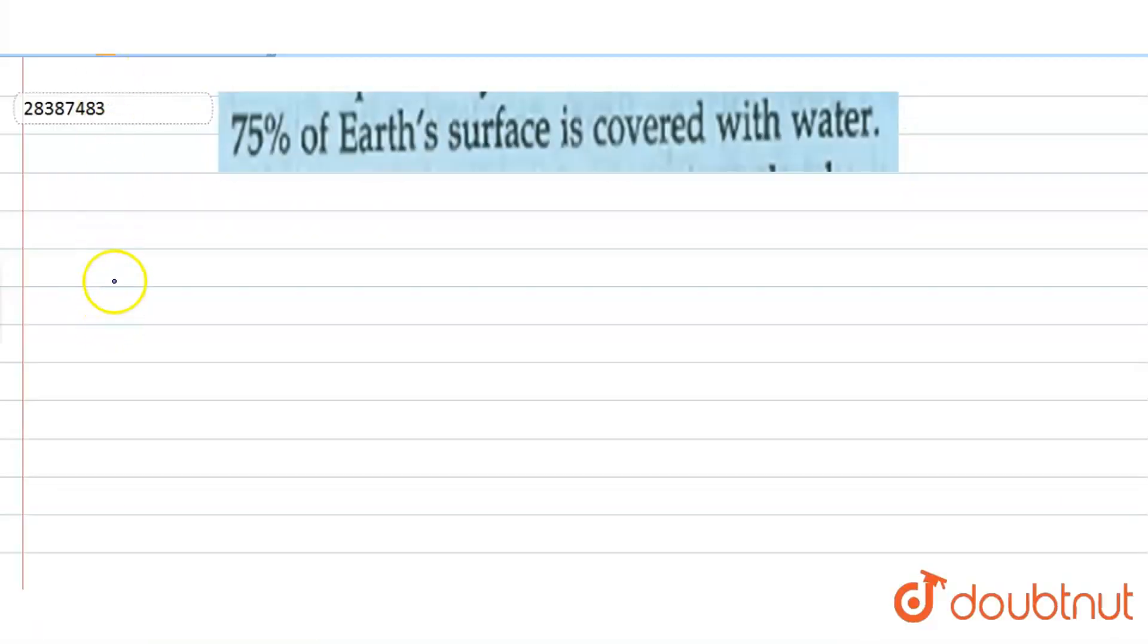Hello everyone! Today's question is a true and false based question. We have given a statement and you need to tell whether it is true or false. Our statement is that 75% of the Earth's surface is covered with water. So, we will understand how much water is on Earth.